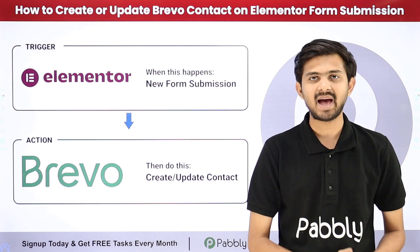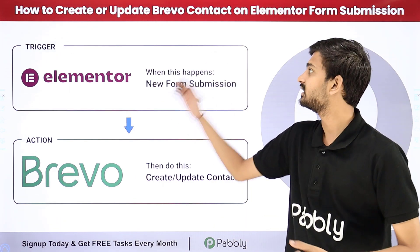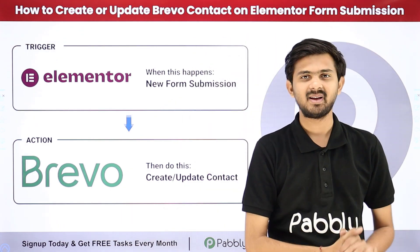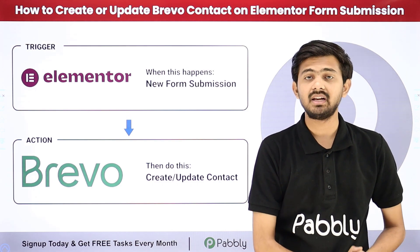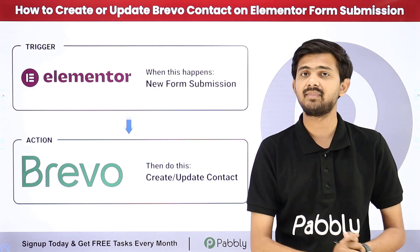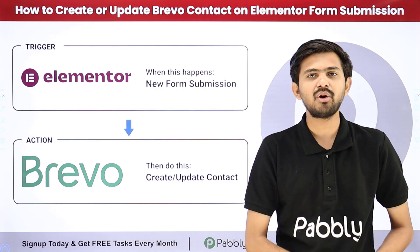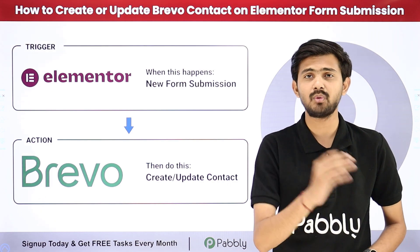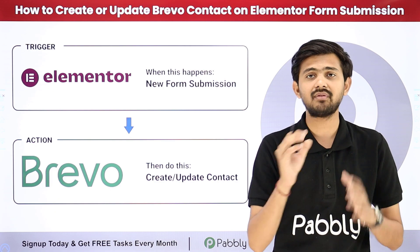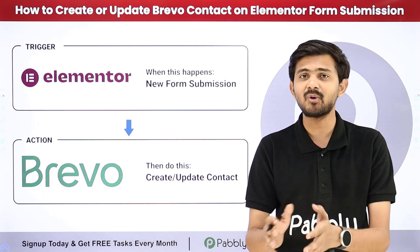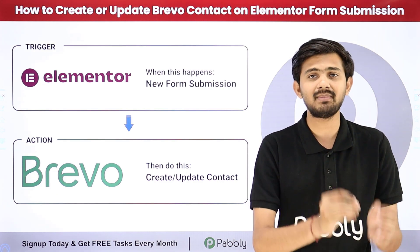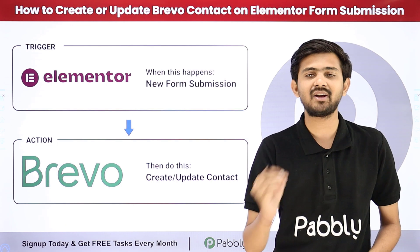Hello everyone, welcome back to Pably. Today our topic is how to create or update a Brevo contact on Elementor form submission. I'm running an online retail business and I have already created an Elementor form for my subscription. Whenever I receive a new form submission through that Elementor form, I want to automatically create or update a new contact in my Brevo account so that I can send personalized emails with promotions and marketing offers to all my contacts.